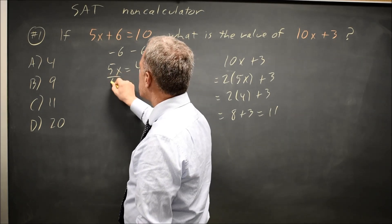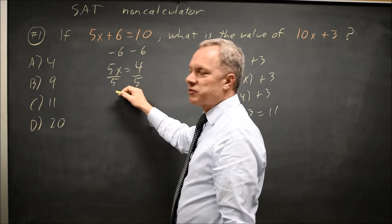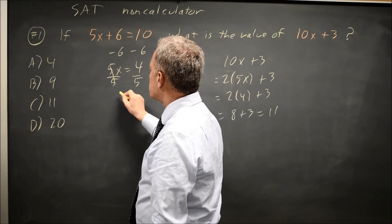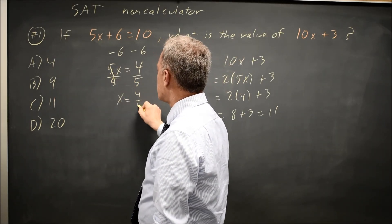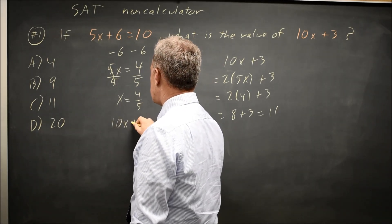So if I divide through by 5, you get x by itself. Remember, we always do the same thing to both sides of an equation. 5 over 5 is 1, so I have x equals 4 fifths, and I can substitute 4 fifths into 10x plus 3.